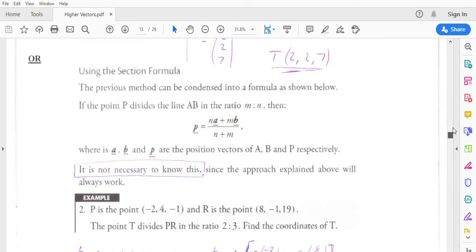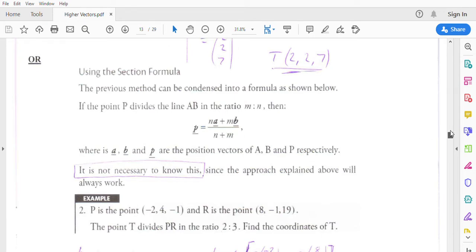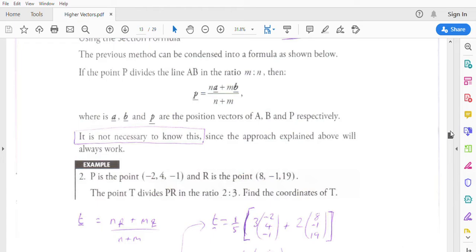And a third way, using the section formula. If you're really keen on having a formula and just substituting numbers into a formula, here's the formula. If the point P divides line AB in the ratio M to N, then point P is N multiplied by vector A plus M multiplied by vector B all over N plus M, where A, B and P are the position vectors of A, B and P respectively.